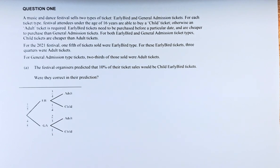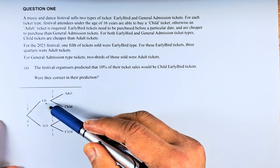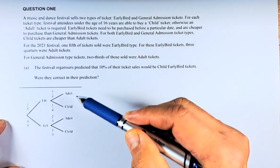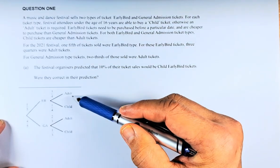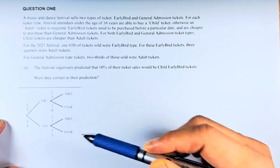Before we can answer that, you need to know that this is a Probability tree diagram — a core question. We are going to draw early bird and general admission. For each category, there is adult and child.